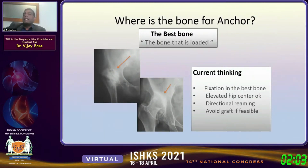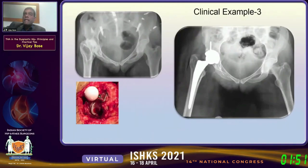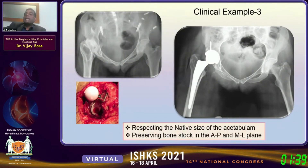Current thinking: the best bone must be loaded, so there's no point putting the socket in poor bone with a bone graft — put the cementless socket in the best available bone. Elevated hip center is not a problem with cementless sockets. Directional reaming is important, and we avoid structural grafts, which do well short term but not medium term. A moderately high hip center with socket size matching the contralateral side gives excellent long-term results. We must respect the native size of the acetabulum — a jumbo cup is bad news.